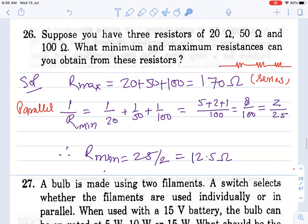Moving to question 26: Suppose you have three resistances 20, 50, and 100 ohms. What is the minimum and maximum? Minimum when connected in parallel, using parallel formula: 200/17 = 12.5 ohms. Maximum when in series: add them simply, 170 ohms.